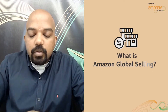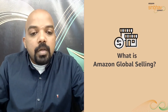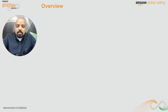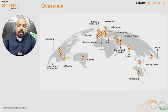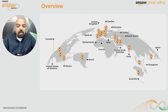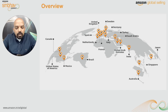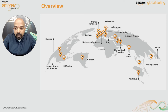So what is Amazon Global Selling? Amazon Global Selling is a program that enables you to sell your locally manufactured goods across Amazon marketplaces around the globe. Currently there are 17 Amazon marketplaces where you can sell your products. These include the US, Canada, and Mexico in North America; Brazil in South America; eight countries in Europe; UAE and Saudi Arabia in the Middle East; and in Asia, Australia, Singapore, and Japan.